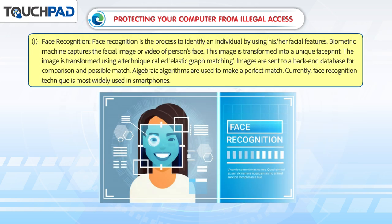Face recognition is the process to identify an individual by using his or her facial features. A biometric machine captures the facial image or video of a person's face. This image is transformed into a unique face print using a technique called elastic graph matching. Images are sent to a back-end database for comparison and possible match. Algebraic algorithms are used to make a perfect match. Currently, face recognition technique is most widely used in smartphones.